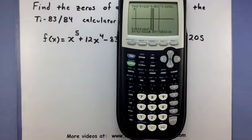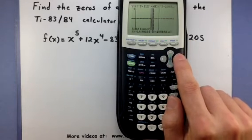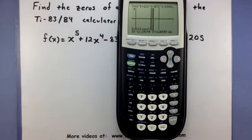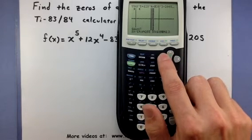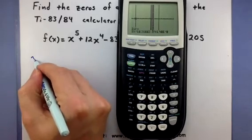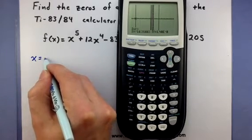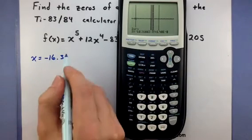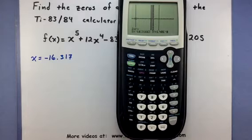So press enter. Now it wants to know the right bound. And I'm going to move it to somewhere on the right side of negative fifteen. So I've placed it at negative thirteen. Press enter one more time and it says make a guess. Let's go ahead and put it somewhere around negative fifteen, good, and press enter one more time. So it says that that zero is actually located at, looks like negative sixteen point three one, and let's go ahead and round that and say three one seven.